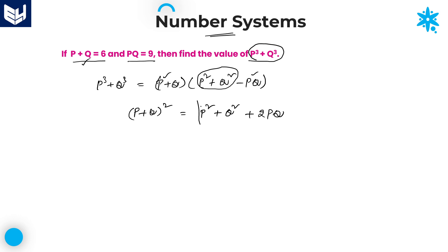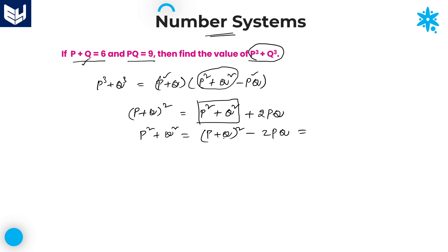As we want the value of p square plus q square, from this we can write p square plus q square is equal to p plus q whole square minus 2pq. Now substitute all the values: p plus q is equal to 6, so 6 square minus 2 times pq, which is 9. 6 square is equal to 36. So 36 minus 18, which is equal to 18.